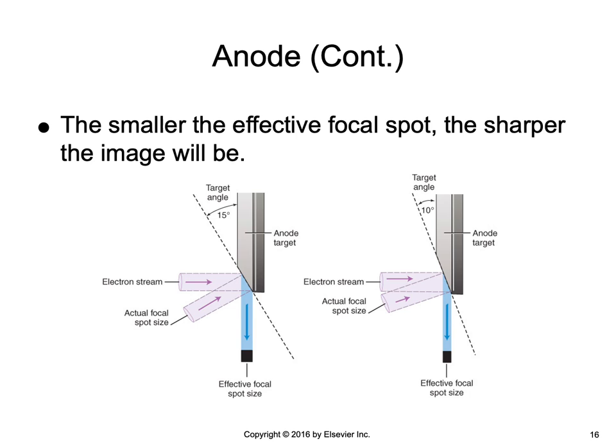This figure illustrates the target angle and line focus principle with two different target angles, showing the effect of target angle on effective focal spot size. You can see that the smaller the target angle, the smaller the effective focal spot size.